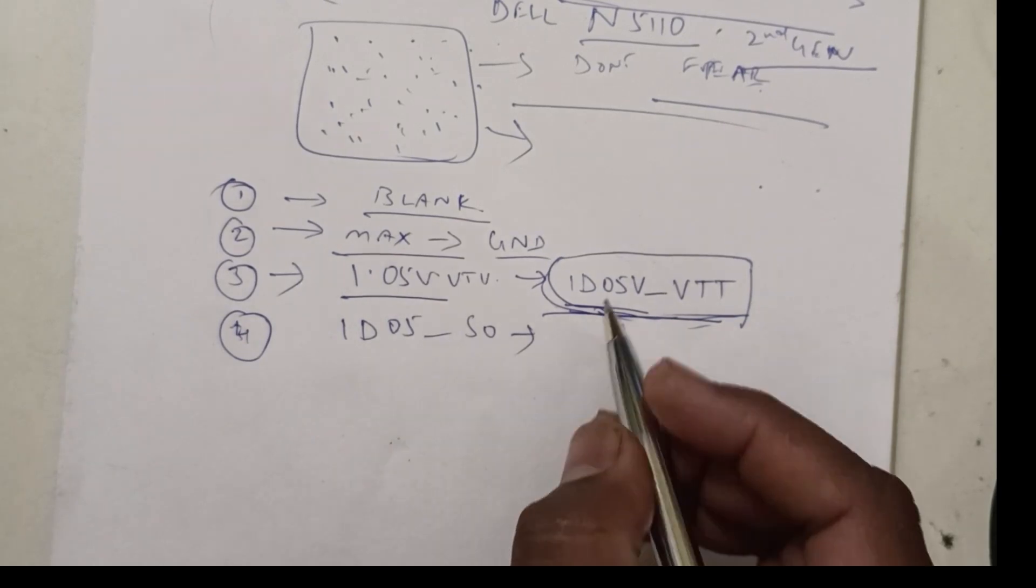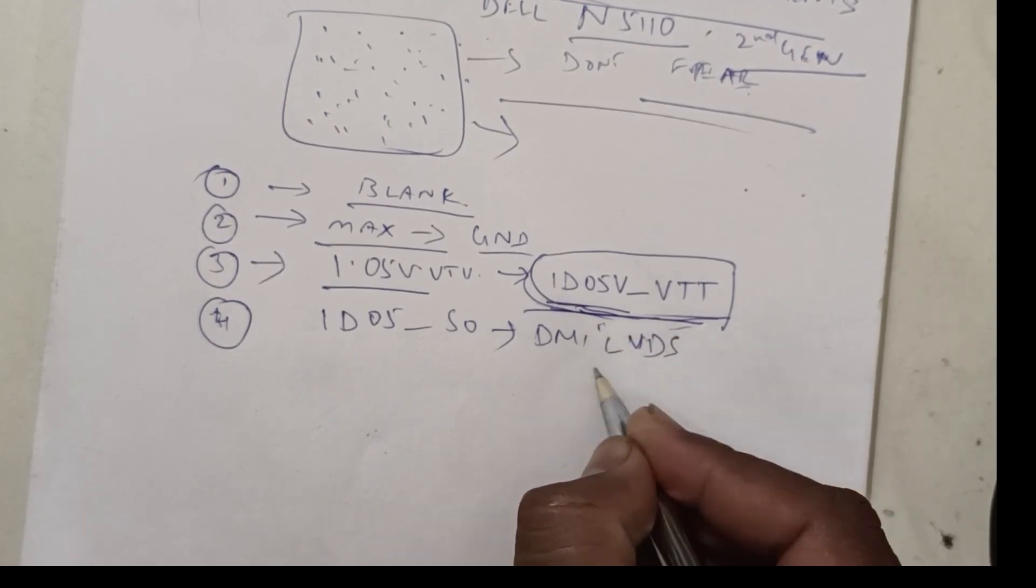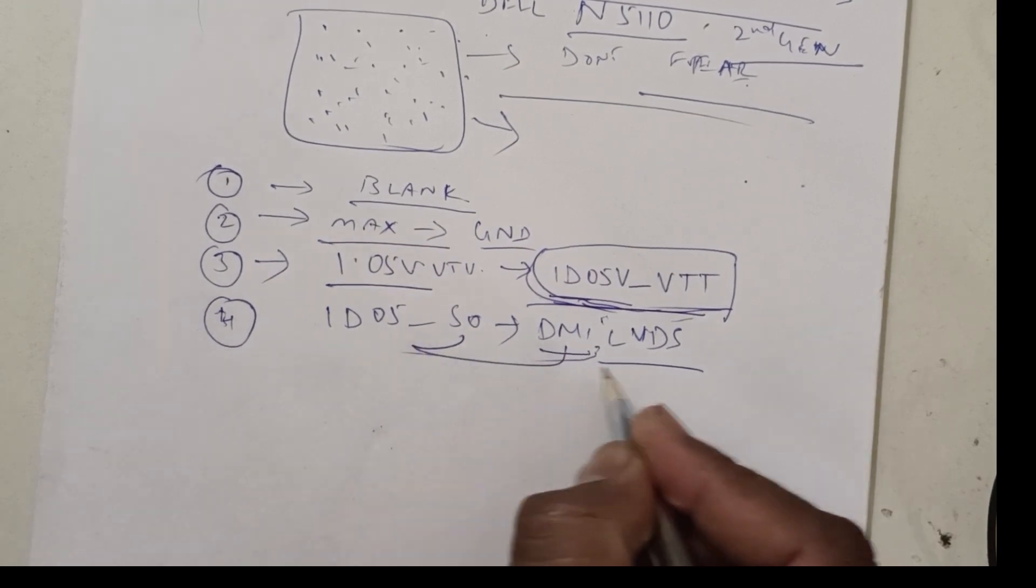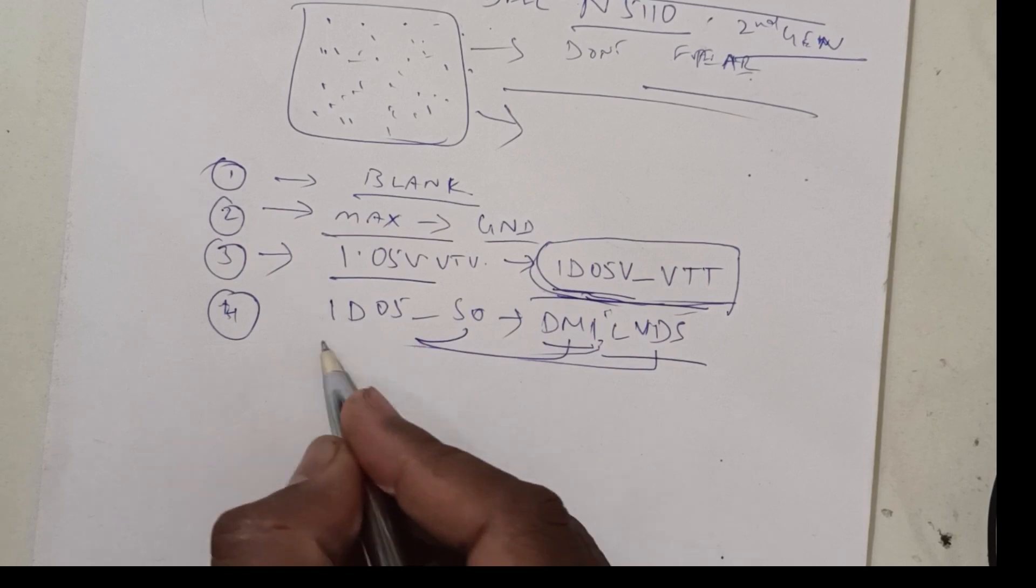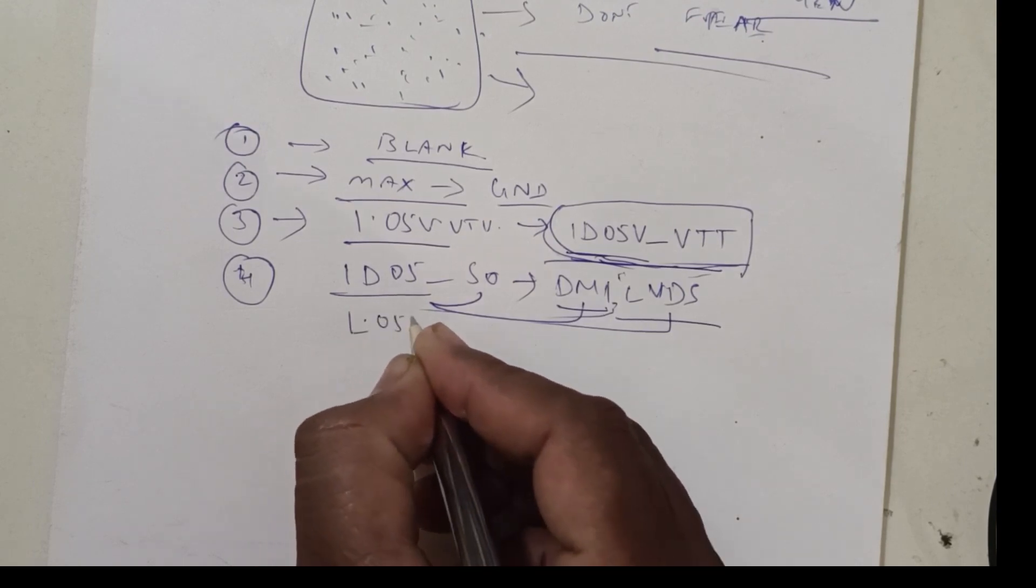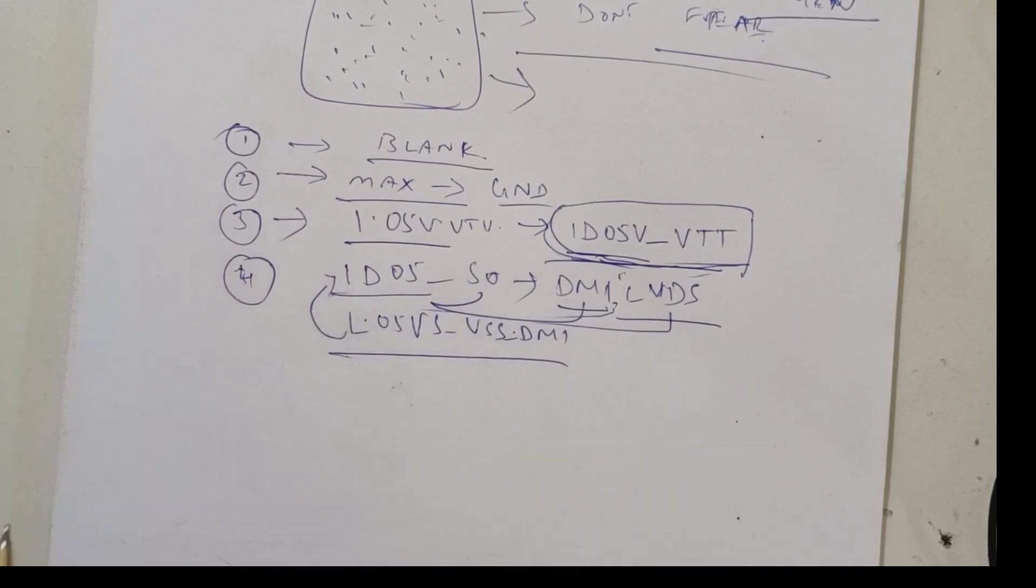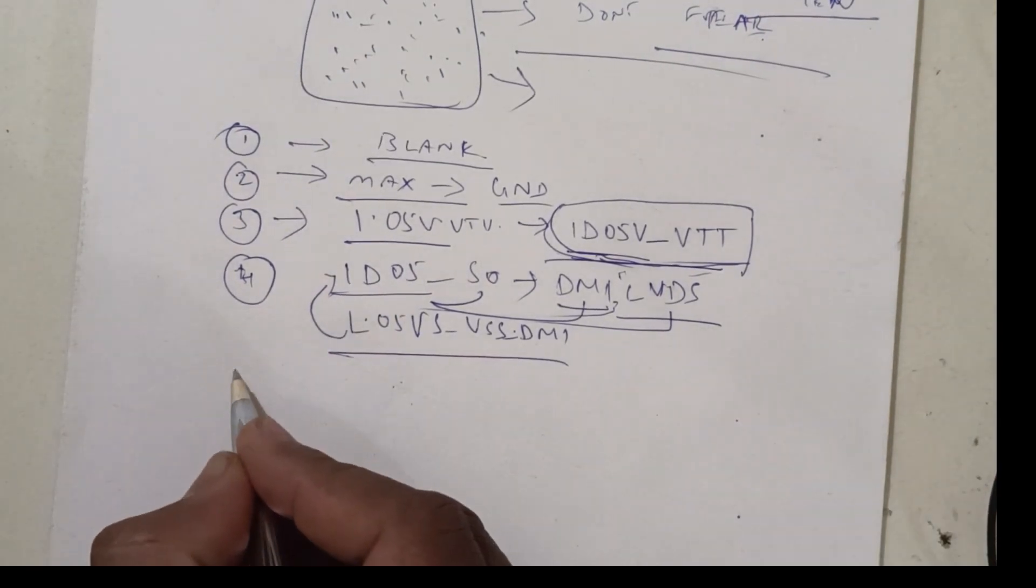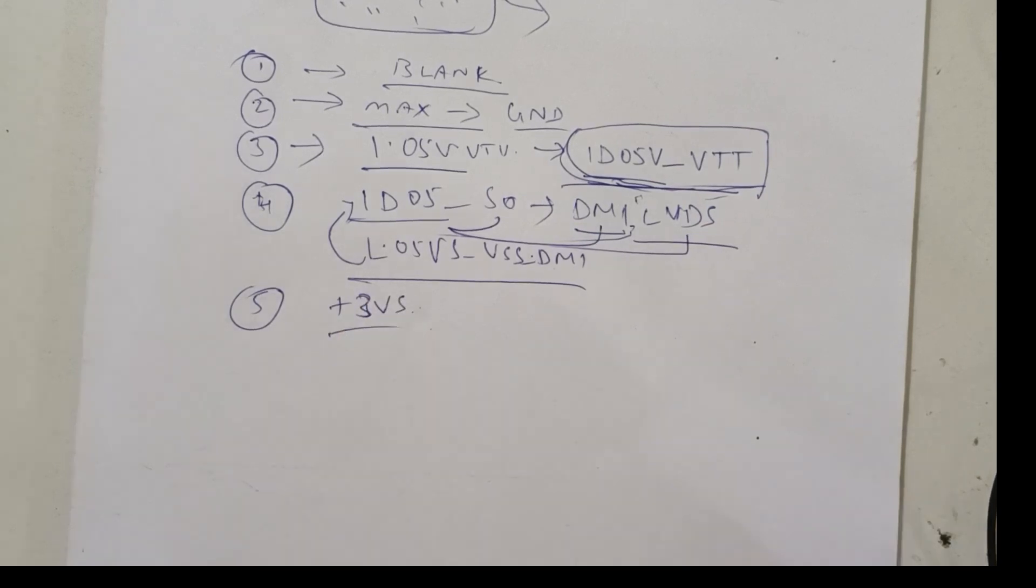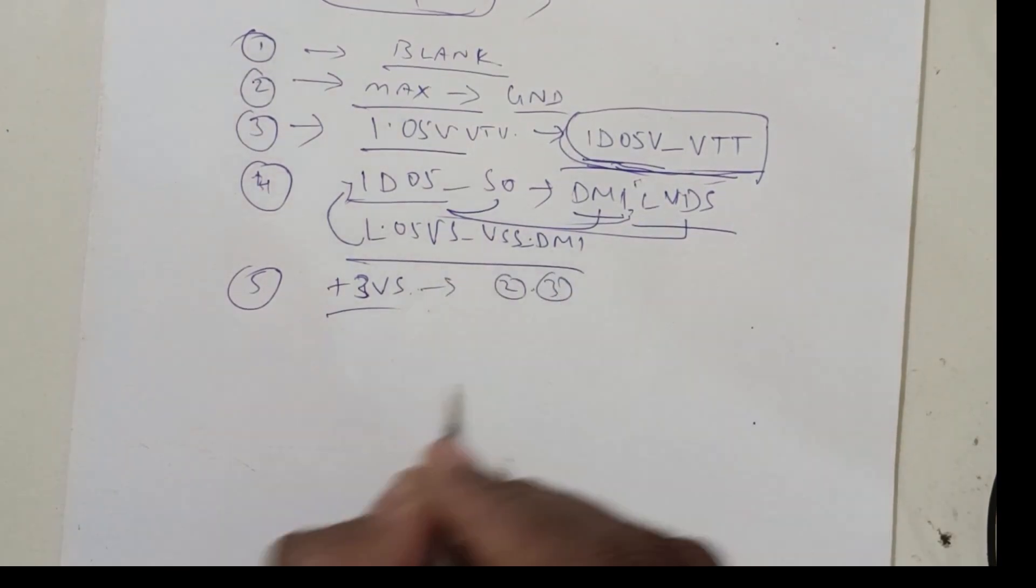And the SODMI files will also be there, and LVDS voltage connected to PCEH. S0, DMI, LVDS all contain 1.05 volts. Those are 1.05 volts underscore VSS DMI. In this name it is connected to PCEH. Other than that, fifth number is plus 3VS.